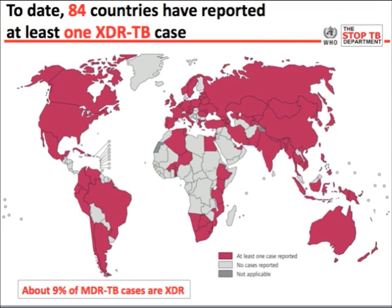Another alarming part of the tuberculosis story is XDR-TB, or Extensively Drug-Resistant Tuberculosis. This means a form of tuberculosis that is fully resistant to most first-line drugs and the most important second-line drugs reserved for MDR-TB treatment. It is present almost everywhere we look for it, when there is sufficient laboratory capacity. XDR-TB is found almost everywhere except in Africa, largely because Africa has not used many second-line drugs and lacks the laboratory capacity to test for this form.